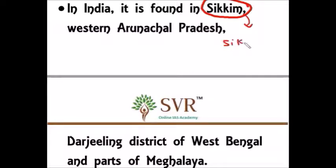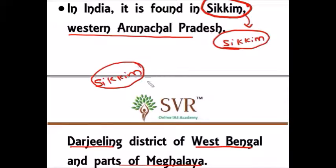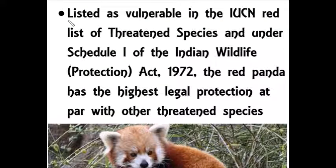Because red panda is mainly found in Sikkim, Sikkim has declared the red panda as its state animal. It is also found in western Arunachal Pradesh, the Darjeeling district of West Bengal, and parts of Meghalaya. In Sikkim, the red panda is distributed all over the state.